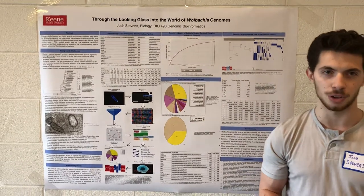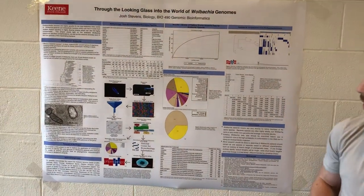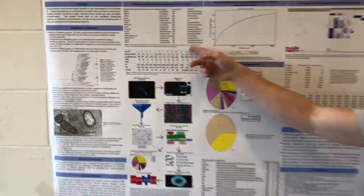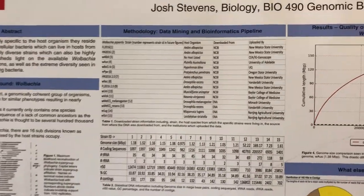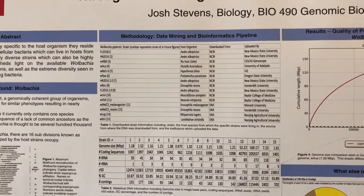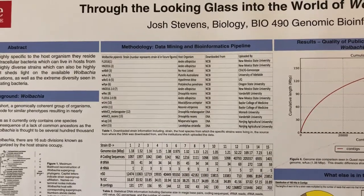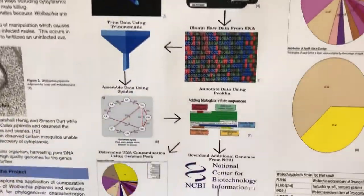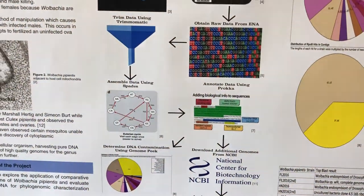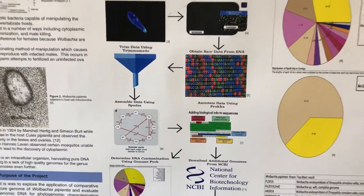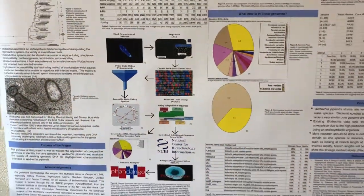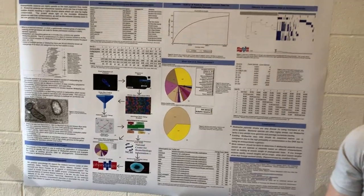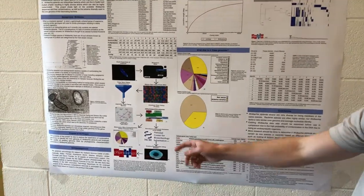I began by downloading raw data from the ENA, which can be seen at the bottom of Table 1. I used Trimmomatic to remove lab-added sequences from the raw data. The raw data was then assembled using SPAdes, which creates long contigs from short sequence reads. Genes in these contigs were then annotated using PROKKA.